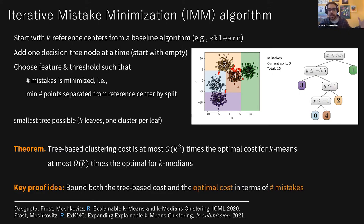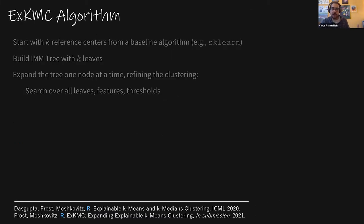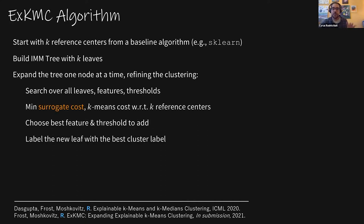Theoretically, we bound the cost with a new proof idea: we look at the K-means cost in terms of the number of mistakes, and show that if the number of mistakes is large, then the optimal clustering cost must also be large. We also have a follow-up work with an algorithm that is faster in practice and allows expanding the tree to more leaves. The idea is to start with the IMM algorithm, then expand it to use more leaves while still maintaining K clusters.